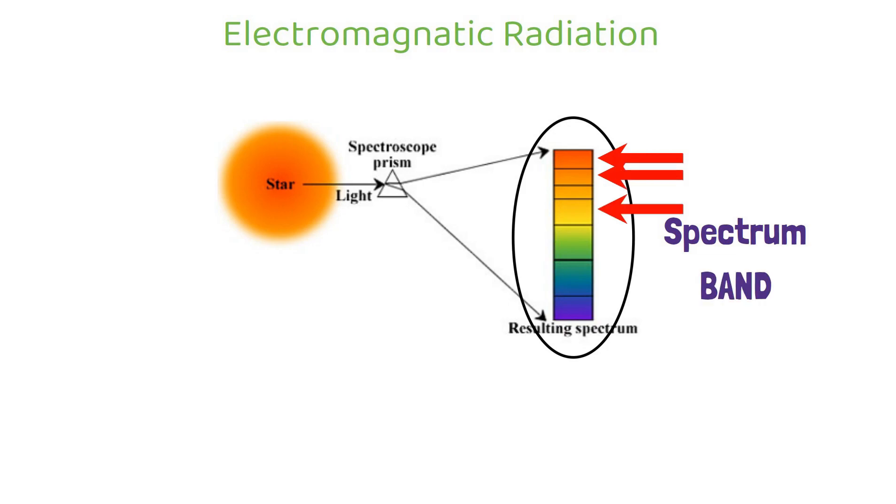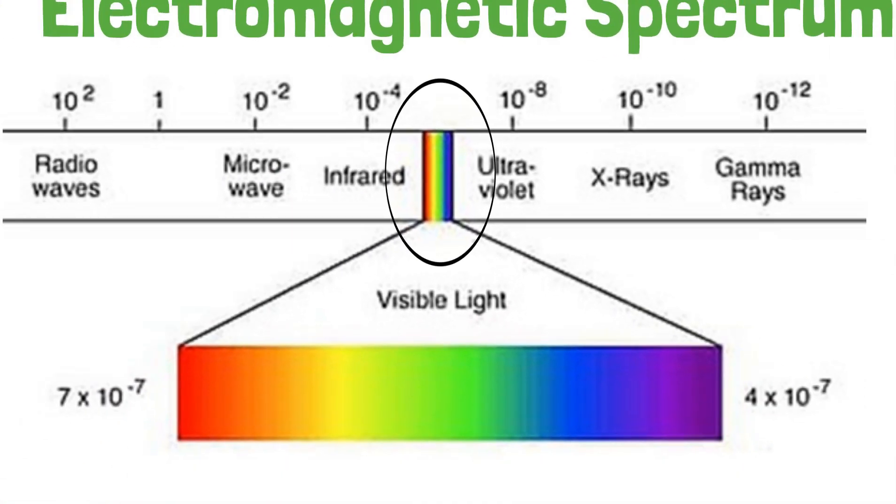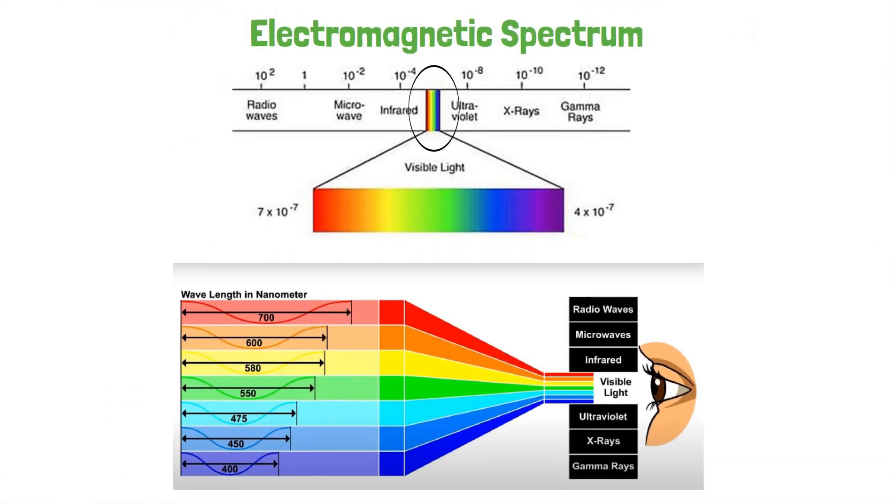Light or visible light is a small part of electromagnetic spectrum as you can see in your screen. The wavelength of visible light ranges from 400nm to 700nm. The human eye can only see this wavelength.